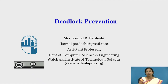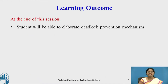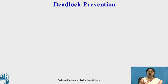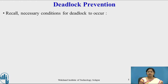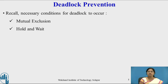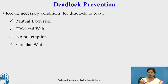Hello everyone. Today we are going to continue with deadlock prevention. As we already studied the deadlock prevention mechanism, at the end of this session students will be able to elaborate the deadlock prevention mechanism. Recall that there are 4 necessary conditions for deadlock to occur: mutual exclusion, hold and wait, no preemption, and circular wait. We already studied mutual exclusion and hold and wait in the last video, and we started with no preemption and studied the first protocol.